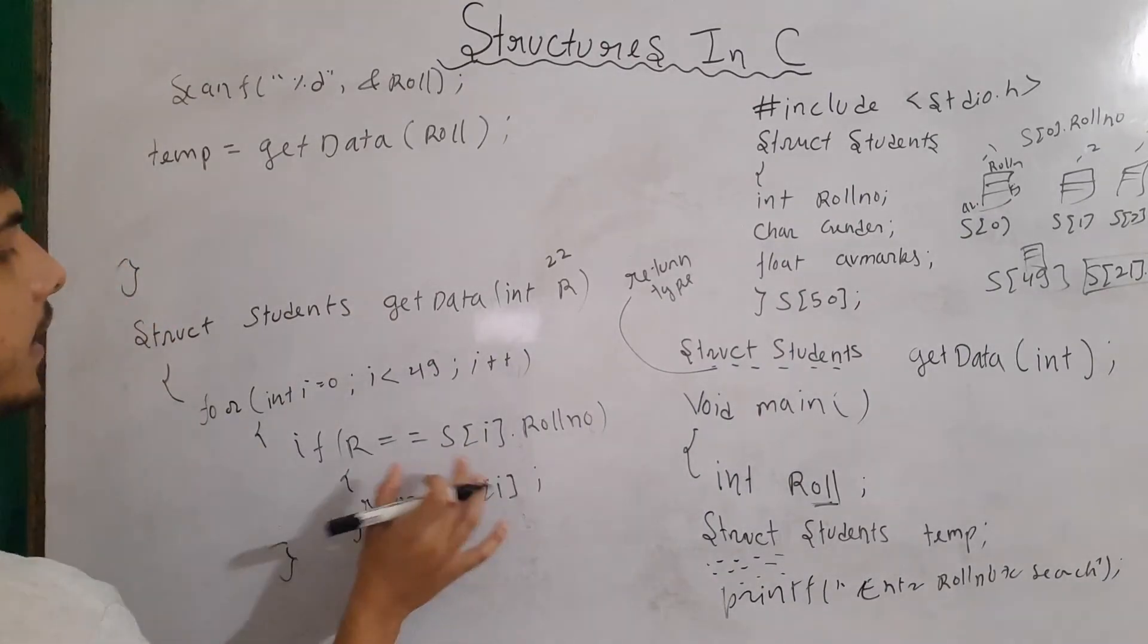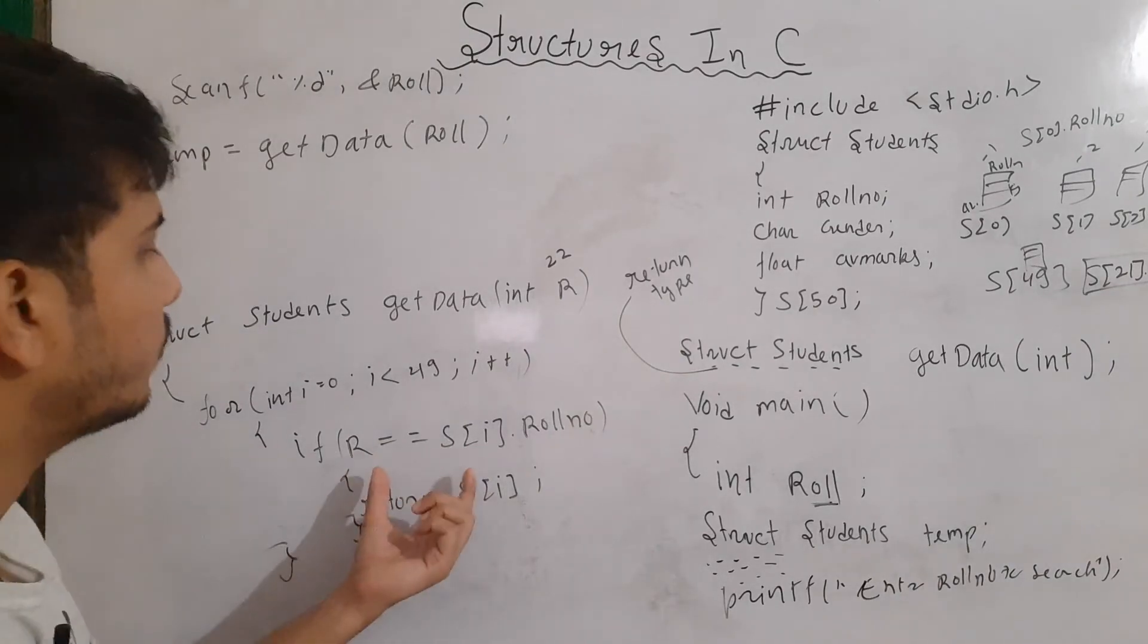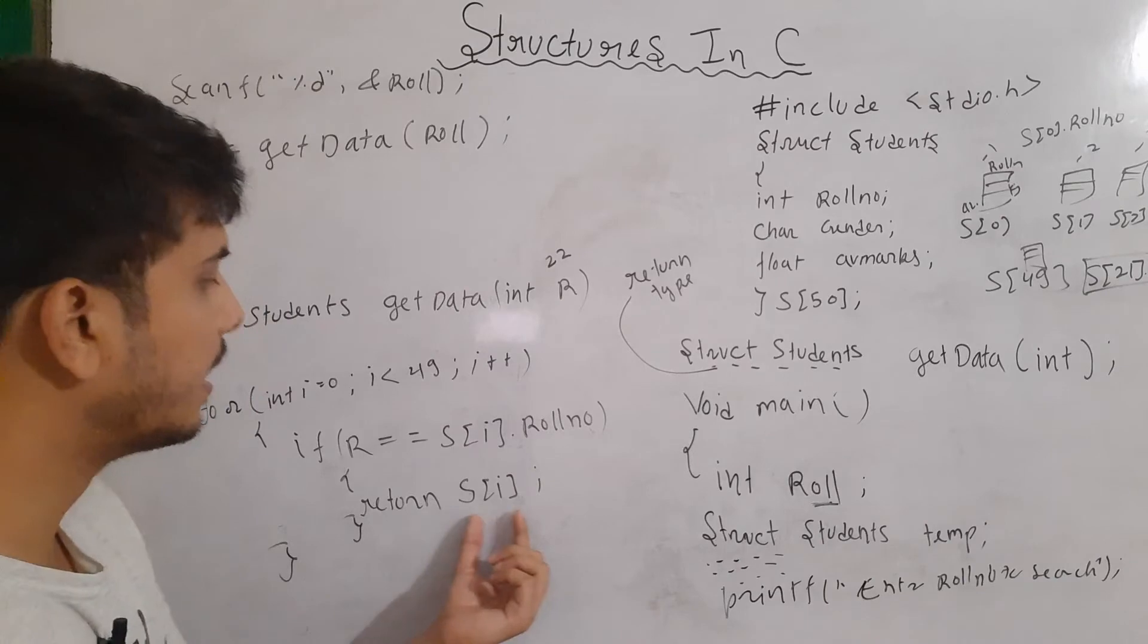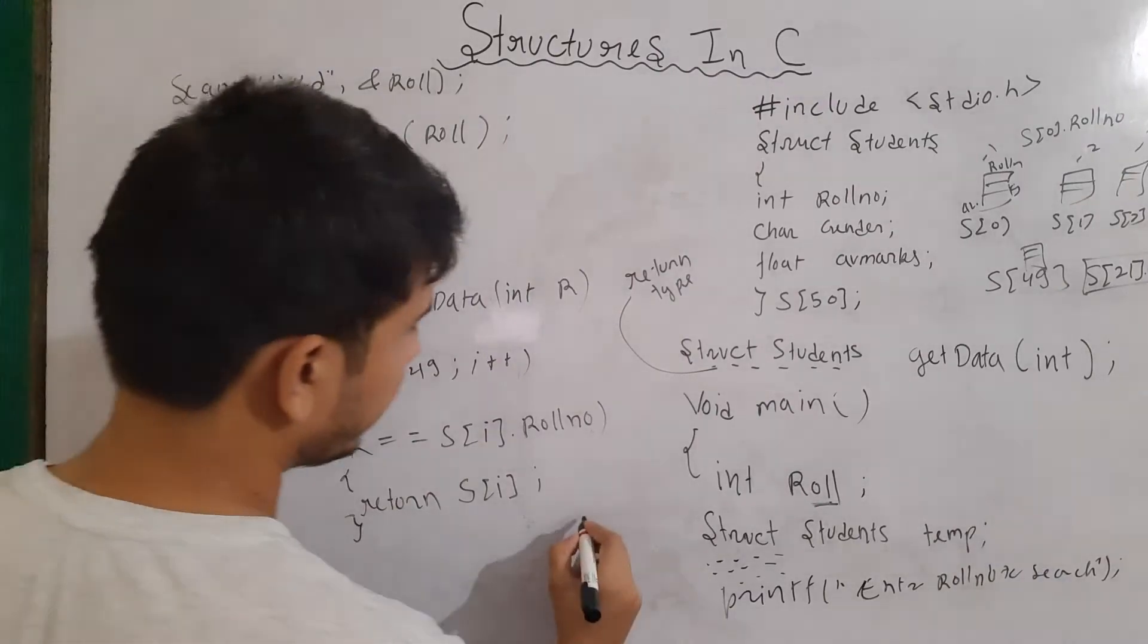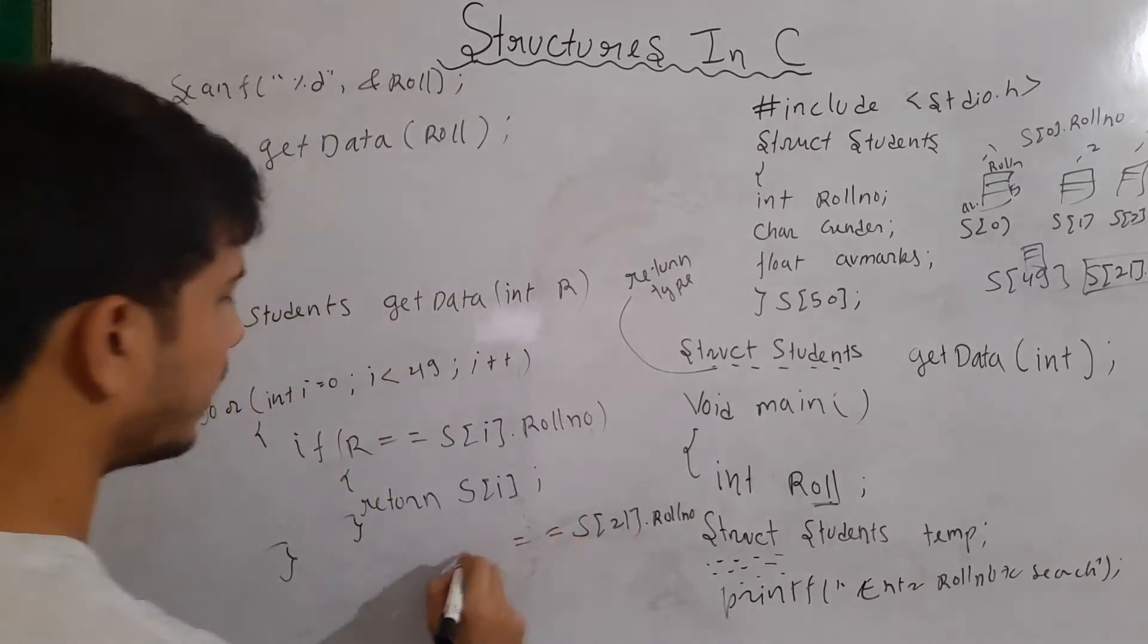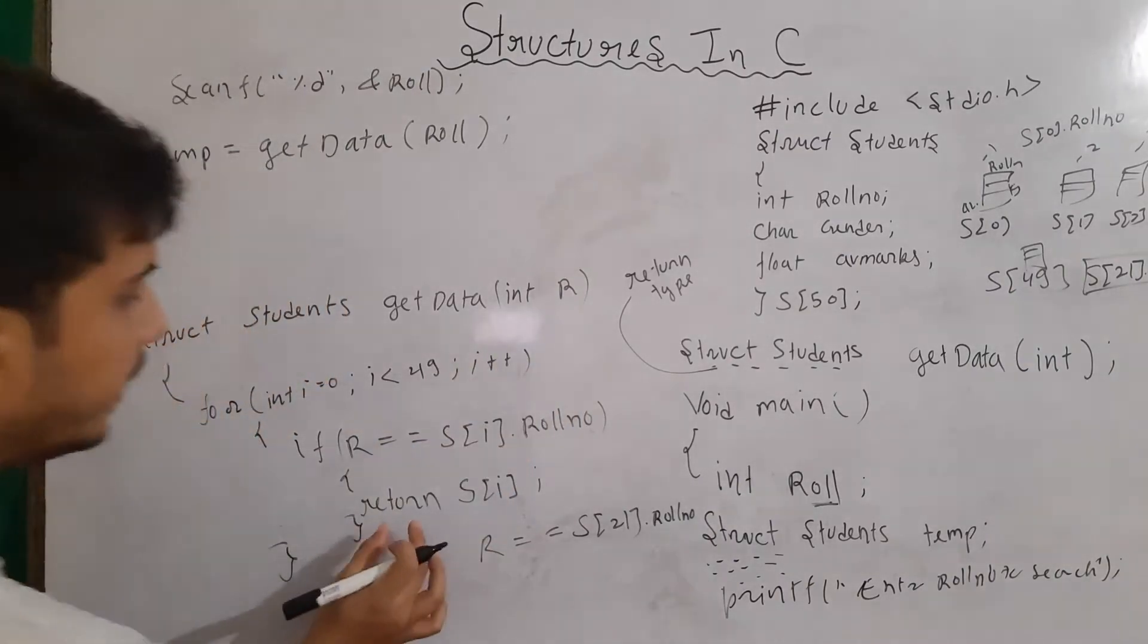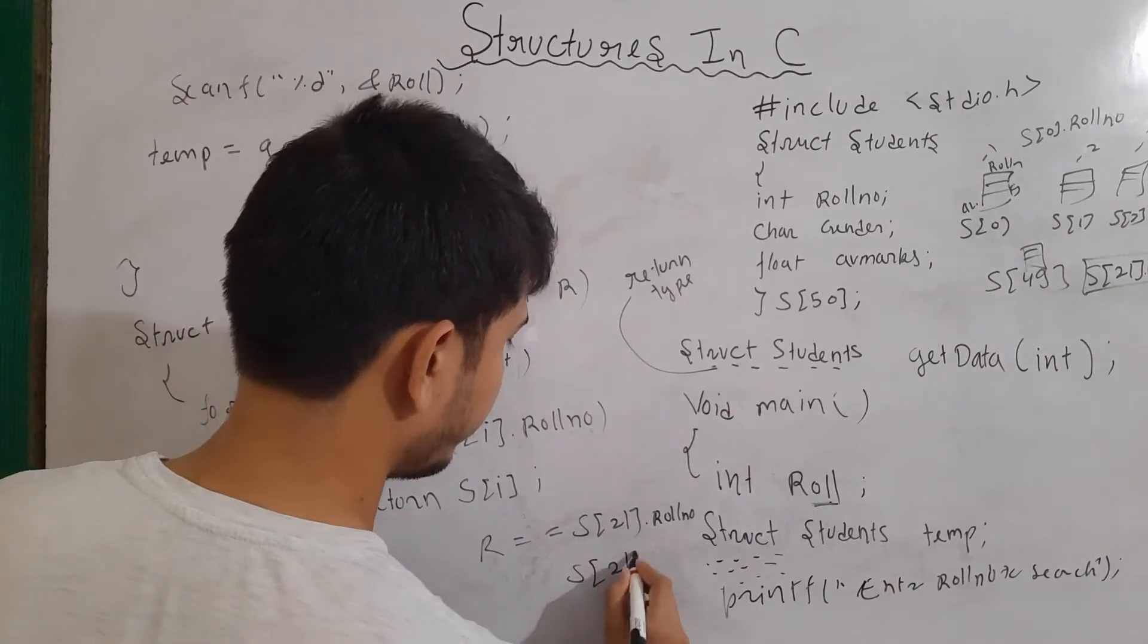Role number of each student is checked with the value of r. And as soon as this role number will be equal, that particular array location or array variable will be sent back from where it is called. Now, let's say role number of 22nd student which will be s of 21, 1 index less dot role number is equal equal to r. Whatever is sent to this function, it is sending s of i. So, it will send s of 21.